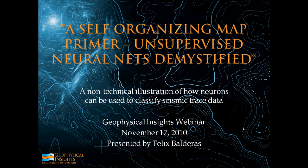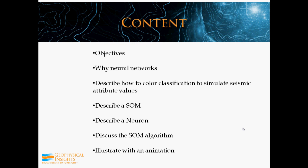I intend this to be a non-technical presentation of how you could use neural networks in the process of seismic attribute analysis. I intend to present why you may want to use neural networks, and I'm going to describe the process of how I'm going to use color classification to simulate seismic attribute values for visualization. I'm going to describe what a self-organizing map — sometimes I call that a SOM — is, describe a neuron, discuss the SOM algorithms, and at the end illustrate all this with an animation.